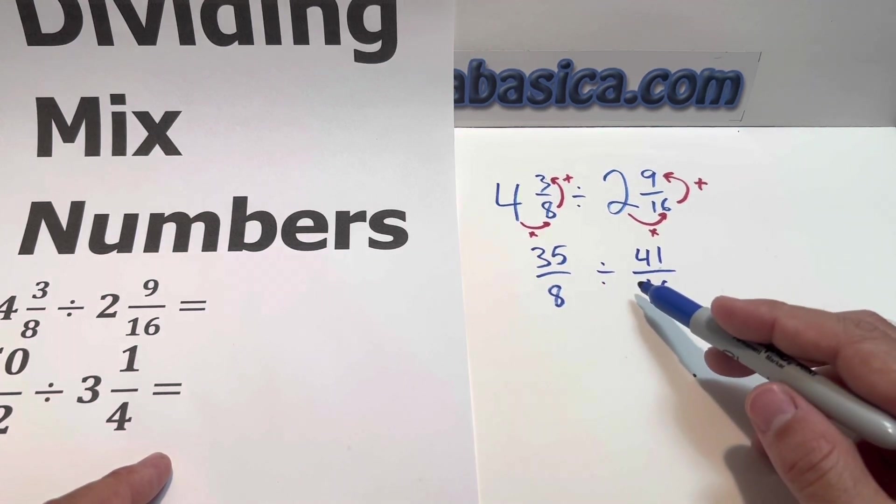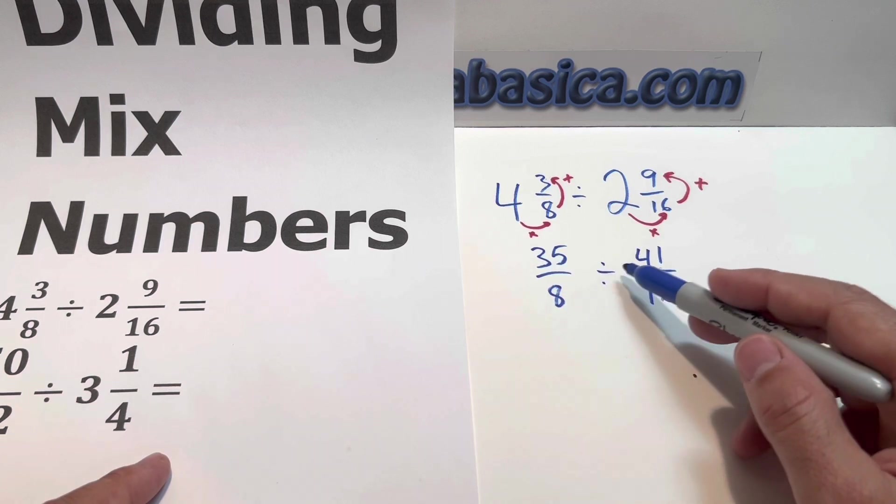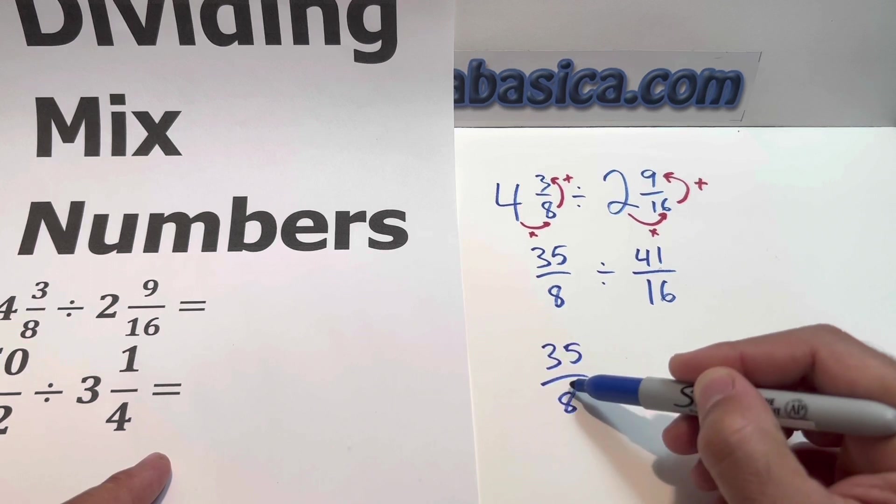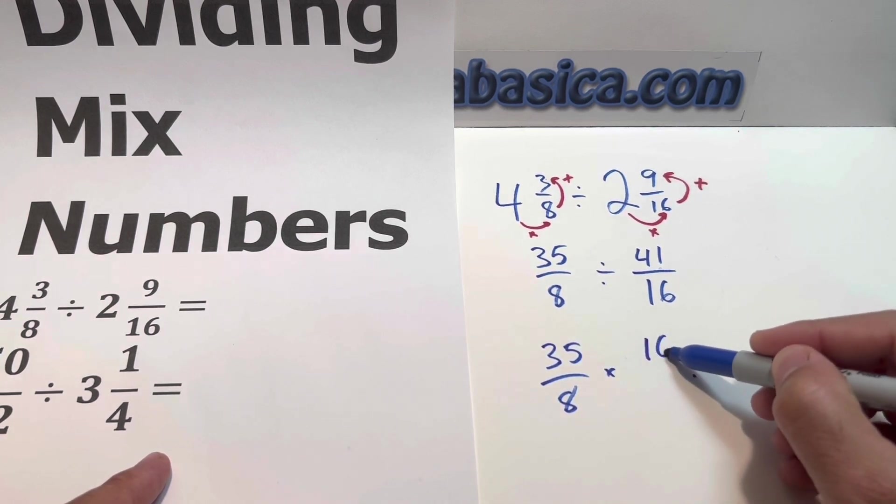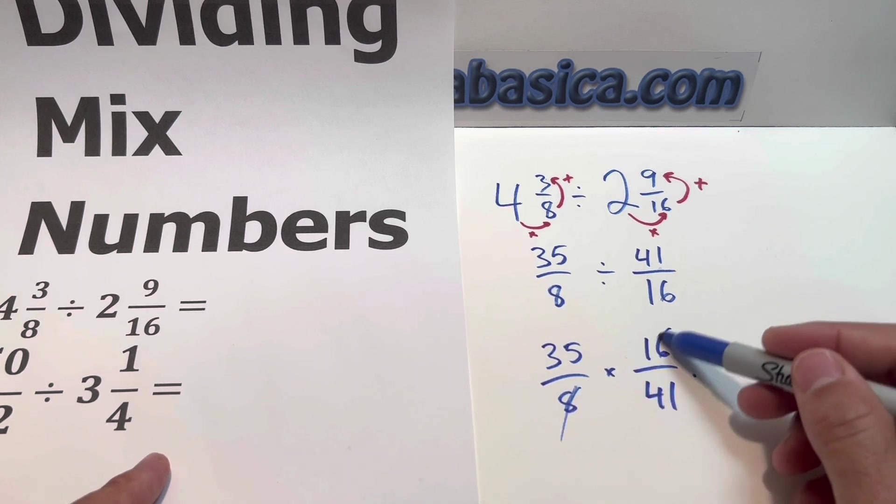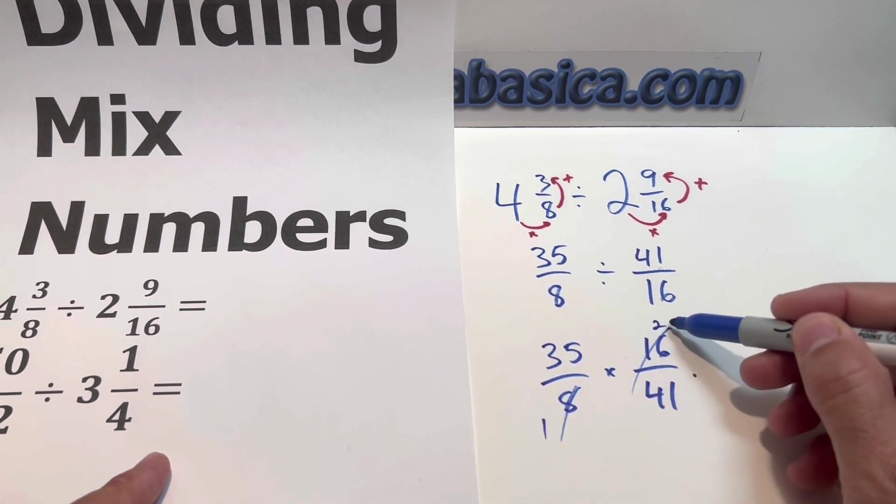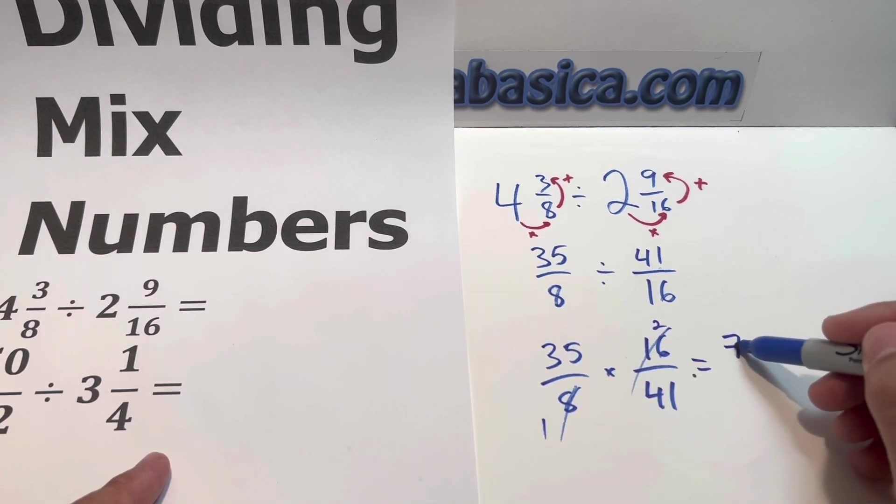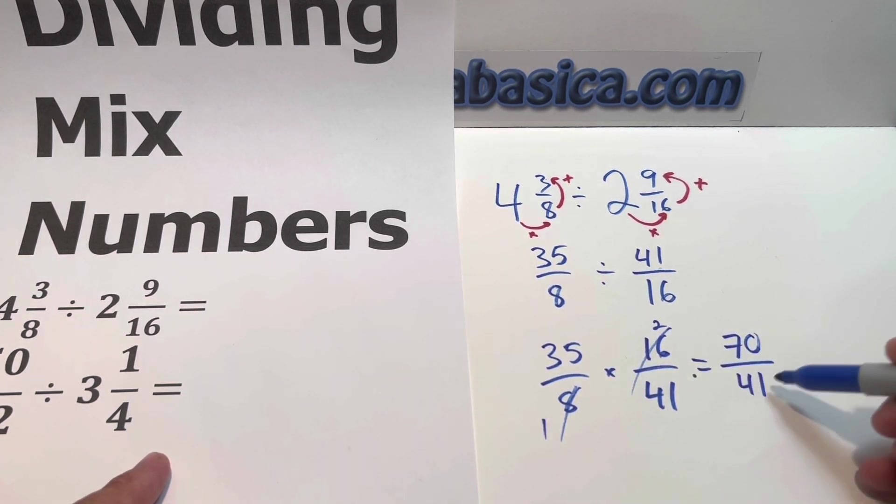Now to divide a fraction, we change it into multiplication by keeping, changing, and flipping. So that would be 35 divided by 8 times 16 divided by 41. We simplify the 8 and the 16. Here is 1, here is 2. 35 times 2 is equal to 70, and we keep the 41 on the bottom.